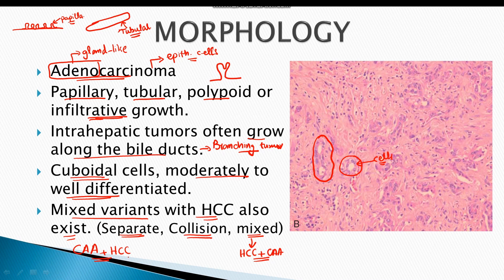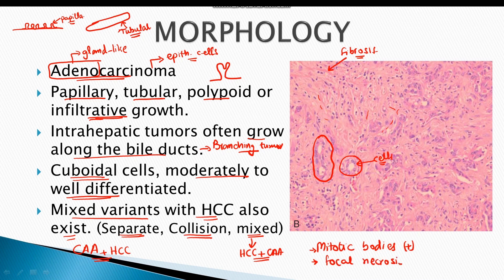Cholangiocarcinoma also shows a strong desmoplastic reaction, meaning there is extensive fibrosis in the stroma due to deposition of collagen, visible as fibrotic strands within the stroma. Additionally, extensive mitotic bodies are present, and focal necrosis can also be seen in this malignancy.